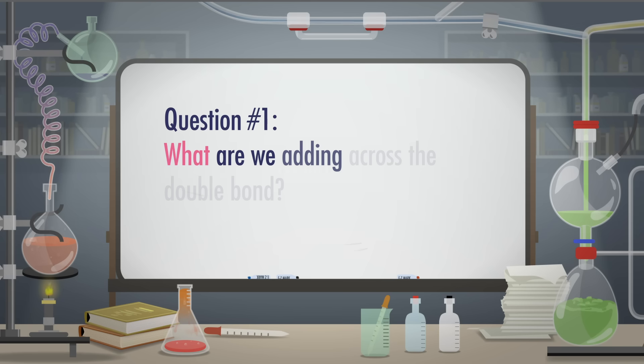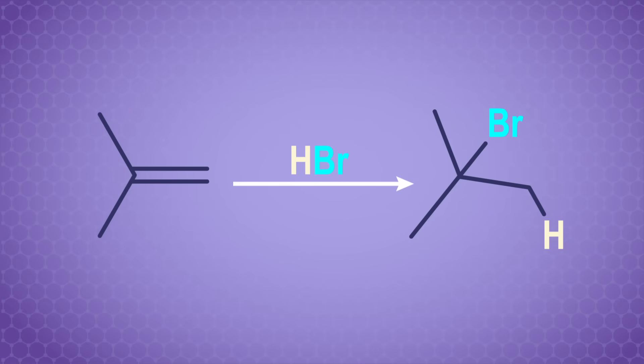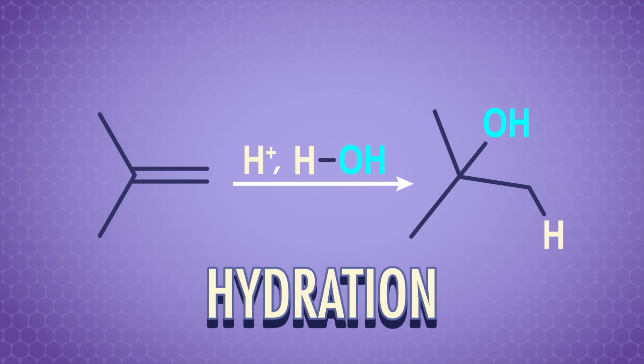That dance, or combo, or handshake is just a specific kind of addition reaction with a special name. Question number one: What are we adding across the double bond? Maybe we're adding hydrogen bromide, so there's a proton on one carbon of the former double bond and a bromine on the other carbon. Or maybe we're adding water across the double bond, H on one side and OH on the other. And if it is water, we call it hydration.